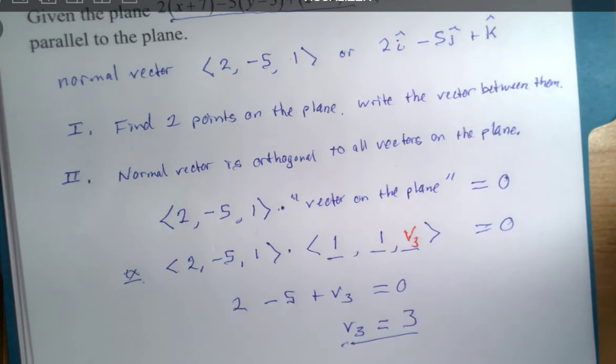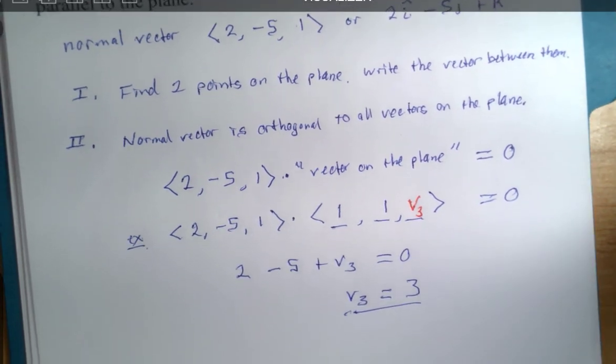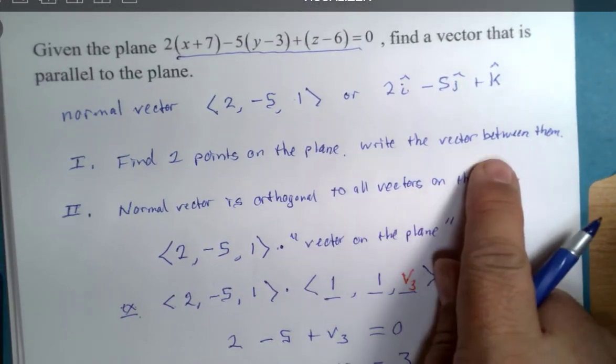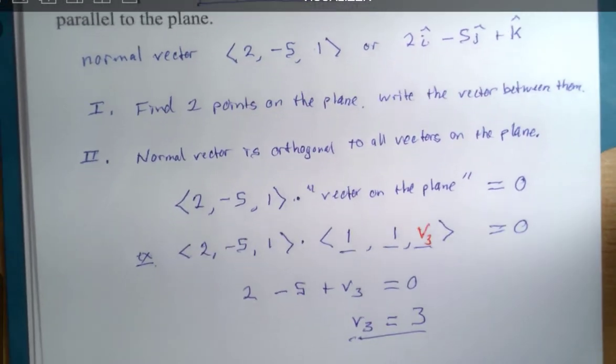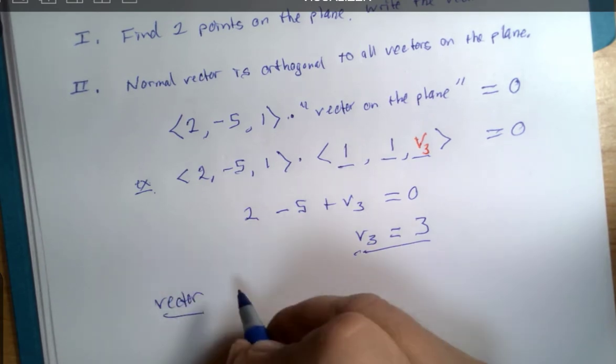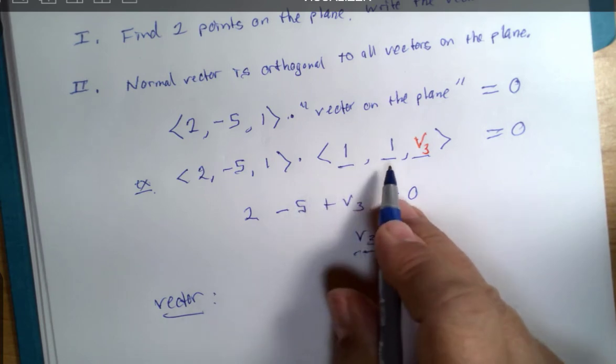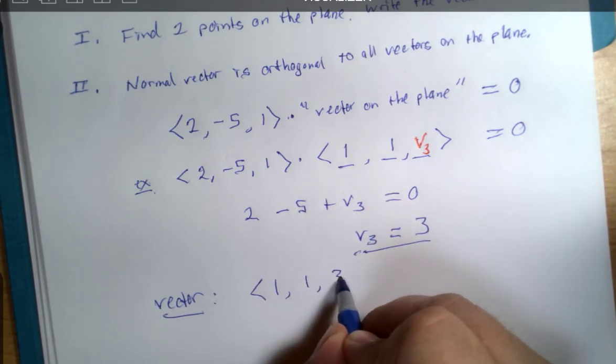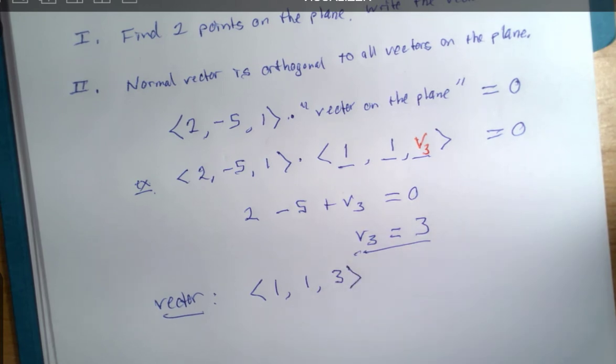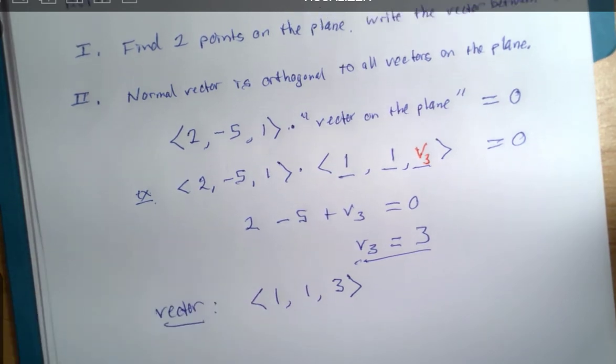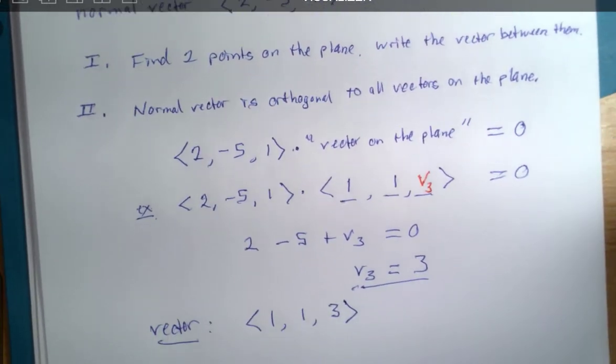Don't celebrate. We haven't finished the problem yet. We've got to read the question. Find a vector that is parallel to the plane. Our vector would be the vector 1, 1, 3. That vector would represent, you know, one of these infinitely many vectors on the plane itself. There you have it.